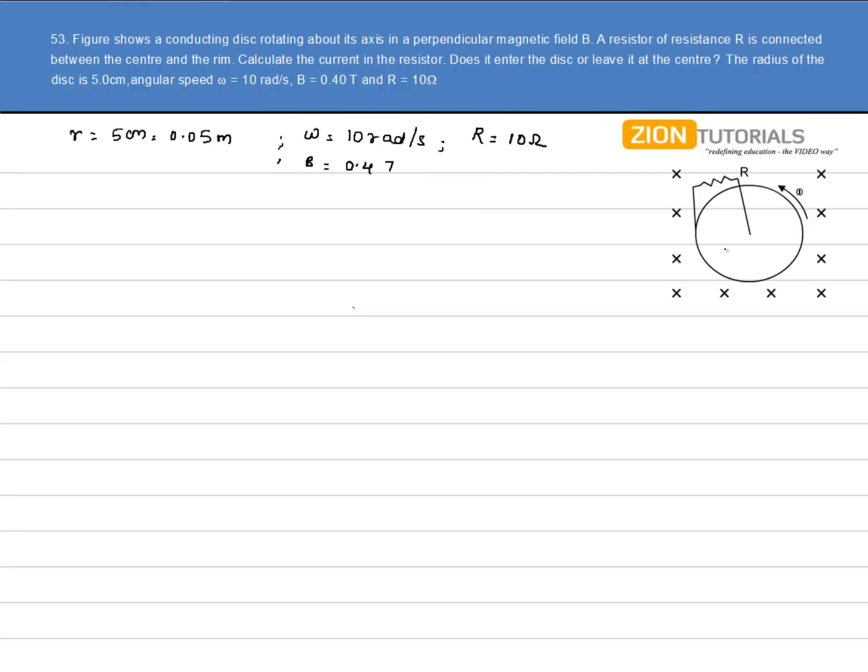The best way to solve this question is assuming that instead of a disk, I simply have a rod of length equal to the radius of the circle that is R, and it is rotated with an angular velocity omega. When a rod is rotating with an angular velocity omega, then the EMF induced in it is given by B omega L square by 2, where L is the length of the rod.